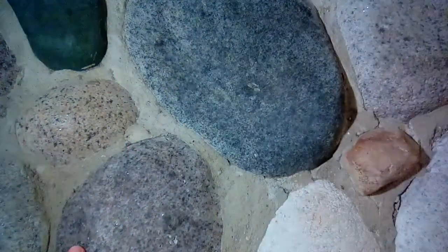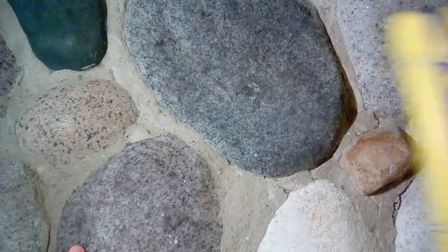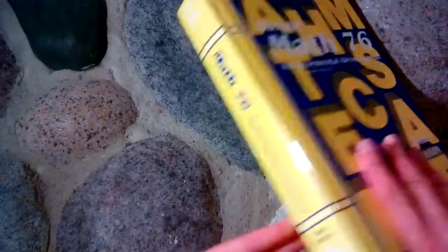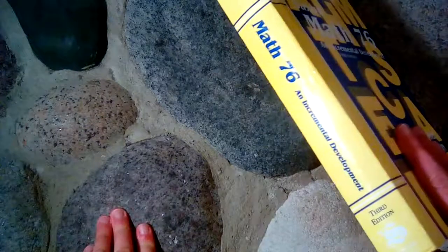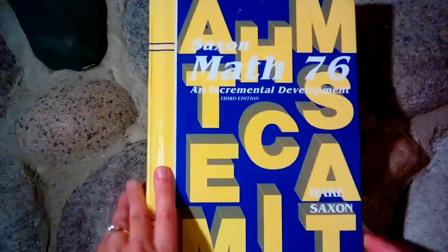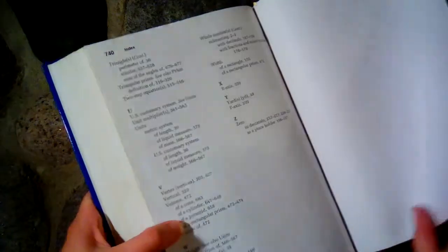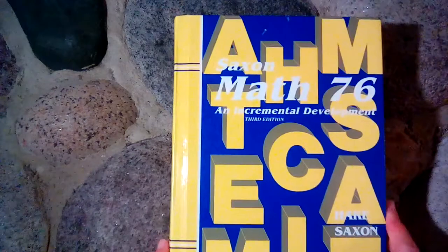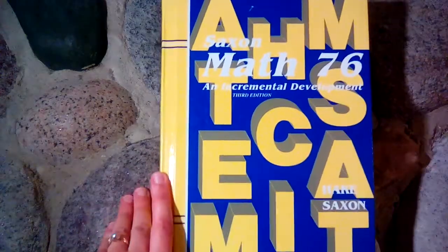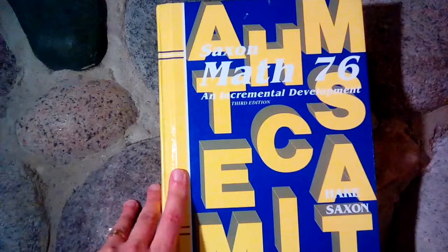And the third edition looks like this. It is also hardcover. And it's a lot thicker, actually, than the second edition. This one has over 700 pages. 740. So this has quite a few more pages than the second edition. Let's take a look at this one.